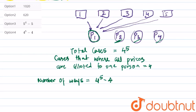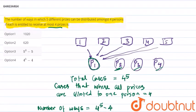So the solution to this is 4 raised to 5 minus 4, that is 1024 minus 4, equal to 1020 ways.